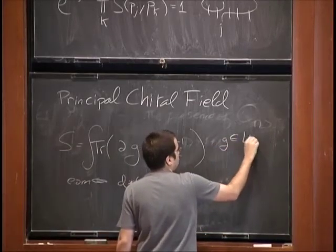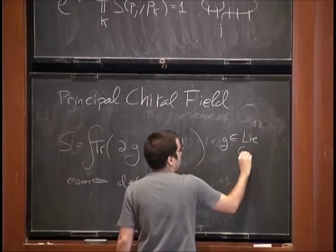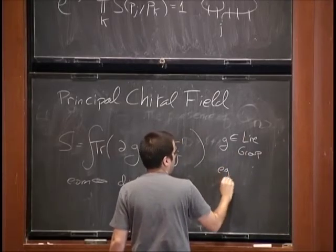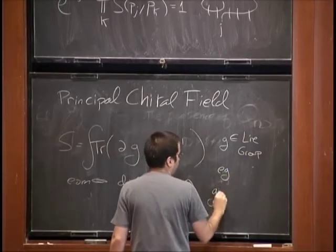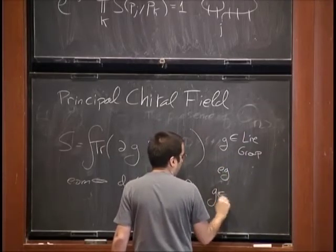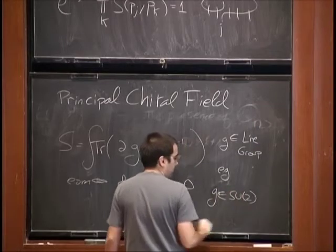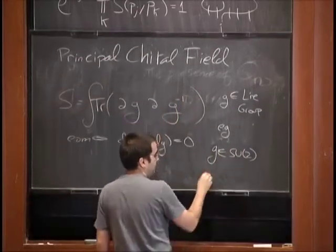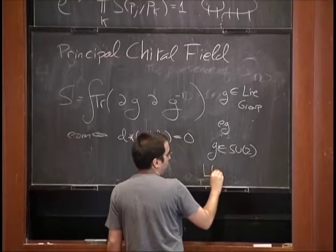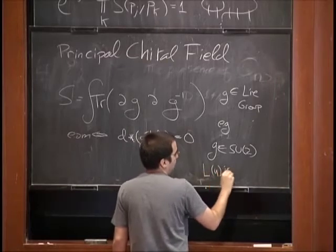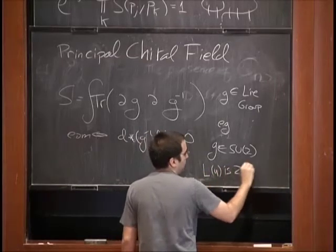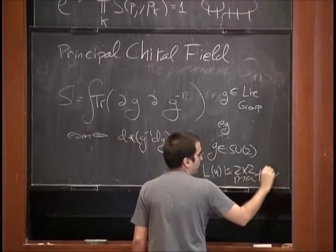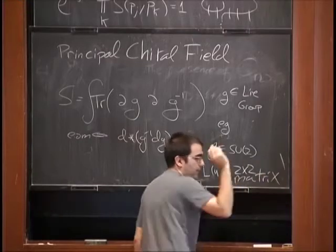G belongs to some group — for example, G can belong to SU(2), in which case L(u) is a 2×2 matrix.